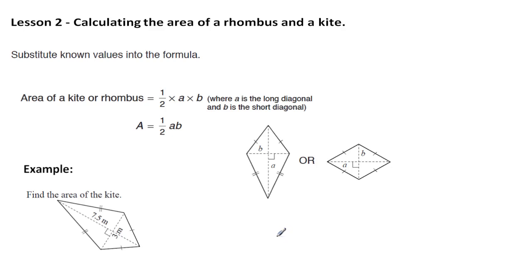It's very straightforward. Once you've identified that a shape is either a rhombus or a kite, you can use this formula here which says the area is equal to half times A times B.